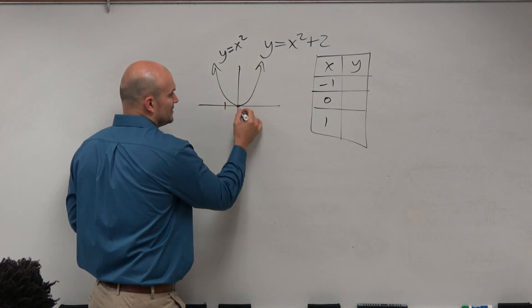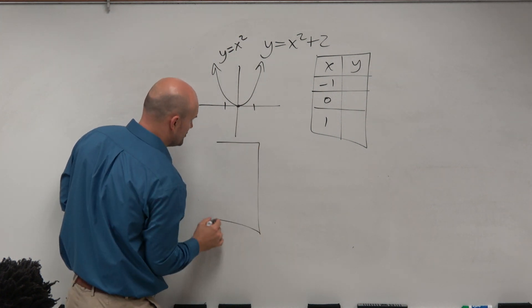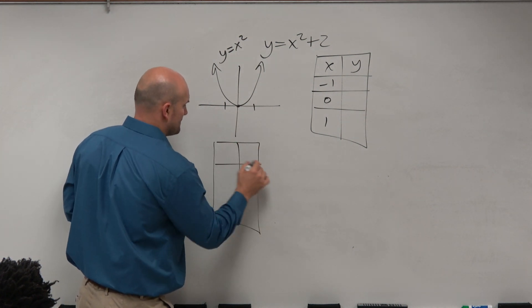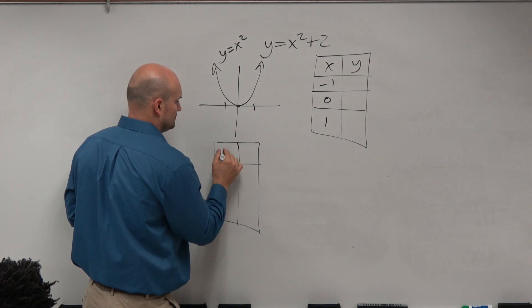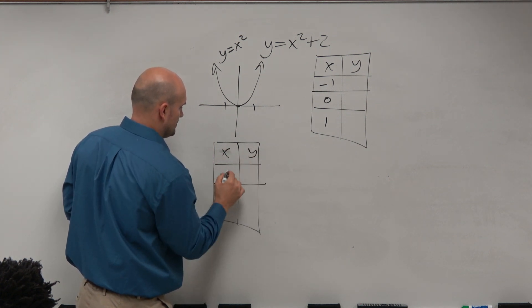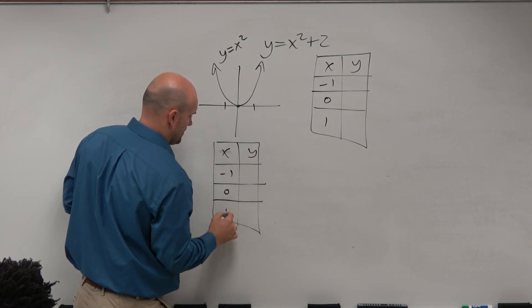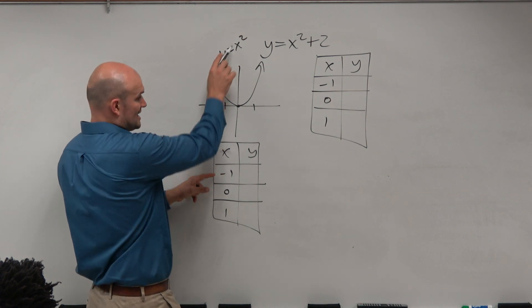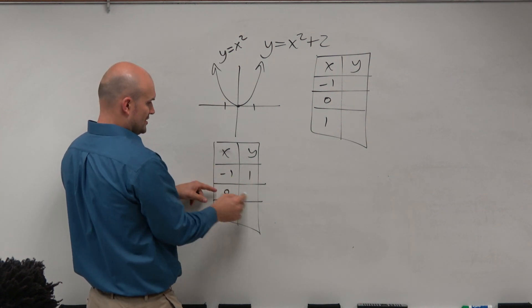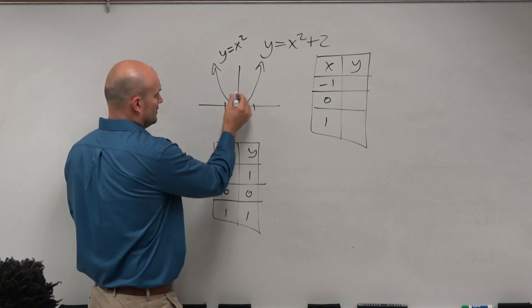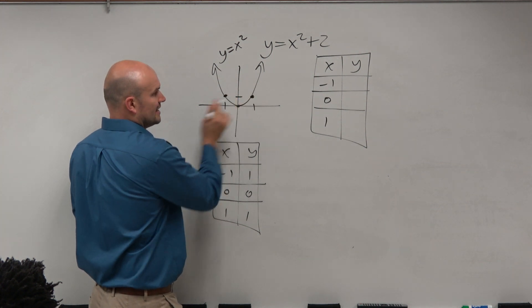Now, hopefully, you guys remember that the standard table, when you plug in negative 1 and 1, so when I plug in negative 1 into x squared, what do I get? 1, right? 0, I get 0, and 1, I get 1. That's why that point looks like there.